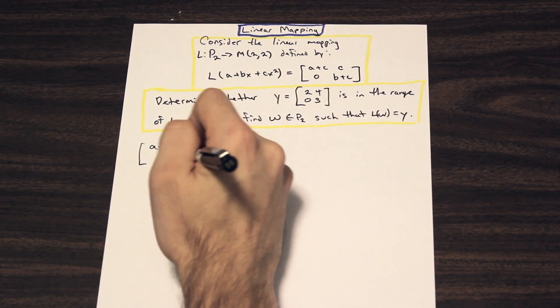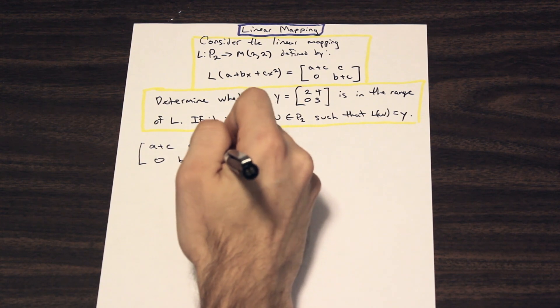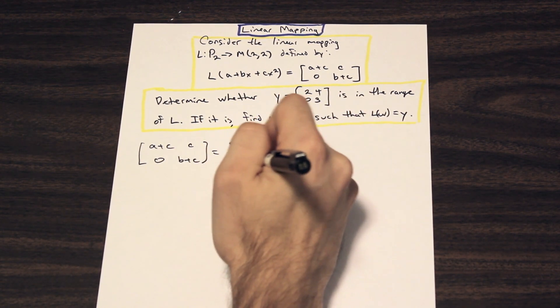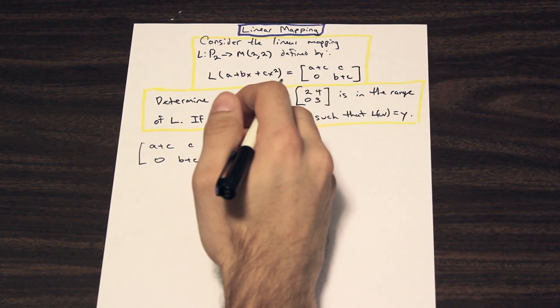So we're going to have A plus C, C, 0, and B plus C. And that's going to be equal to 2, 4, 0, and 3. And we're just going to create a system of equations here.